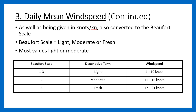As well as being given the value in knots, it is also converted to something called the Beaufort scale. Rather than giving the number in knots, the Beaufort scale gives it as light, moderate, or fresh. If it's 1 to 10 knots, it means it's light. If it's 11 to 16 knots, it means it's moderate. If it's 17 to 21 knots, it means it's fresh. One thing I don't like about the large data set is the specification doesn't specify exactly what you need to know, so I honestly don't know if you need to remember these specific conversion values. They haven't asked a question on it yet. One thing to note is that most values are either light or moderate — there aren't that many values that are fresh.